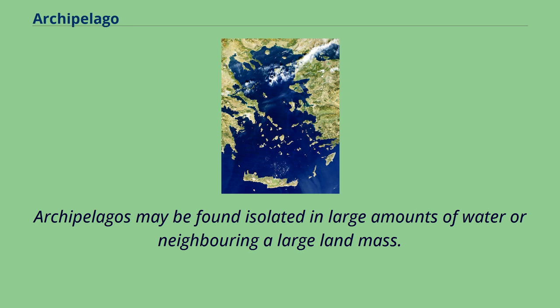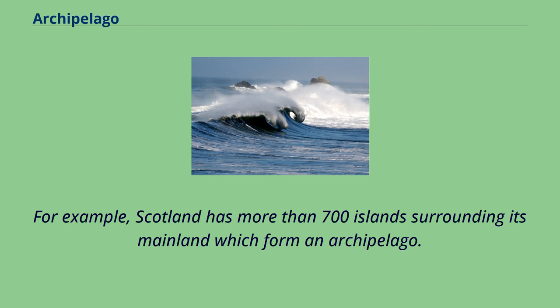Archipelagos may be found isolated in large amounts of water or neighbouring a large landmass. For example, Scotland has more than 700 islands surrounding its mainland which form an archipelago.